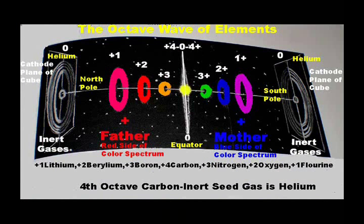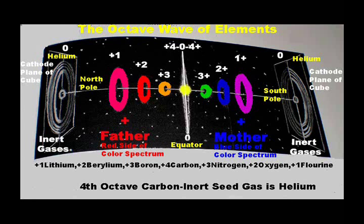The inert gases are the seeds for each octave of elements as the spiraling electric vortices wind them up from their nebulous and unseen conditions of the undiscovered two pre-hydrogen octaves of the elements into the extremely dense conditions of the radioactive elements of the ninth octave. There are eight tones to the octave. The center sun anode is two — a balanced pair — with father red on the left hemisphere and mother blue on the right hemisphere.